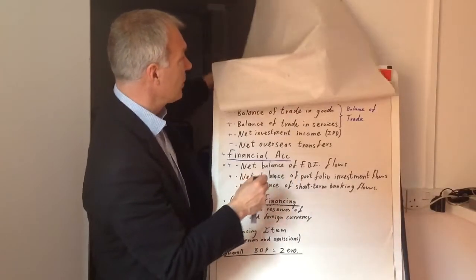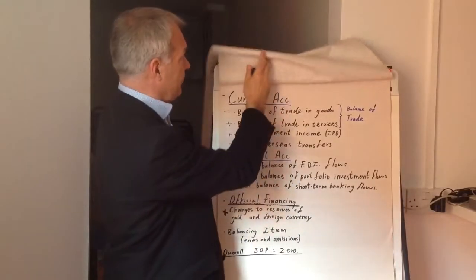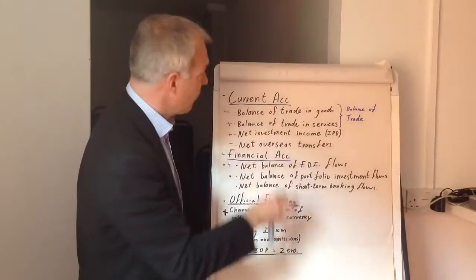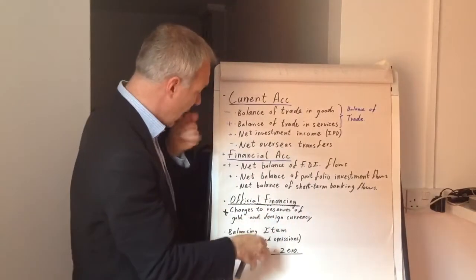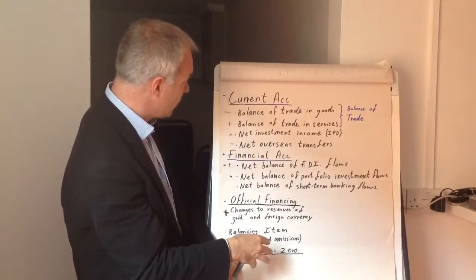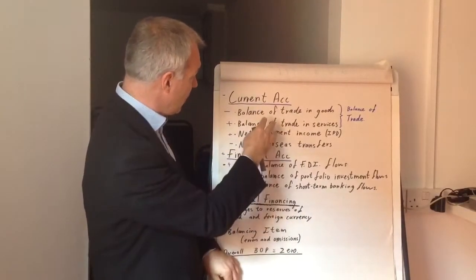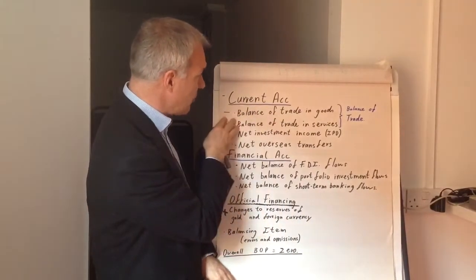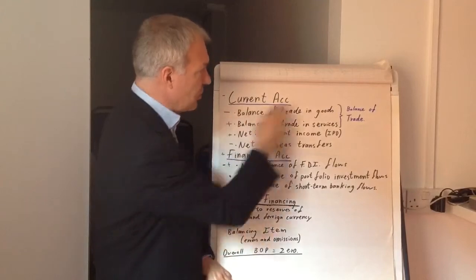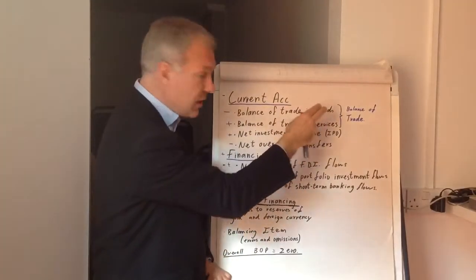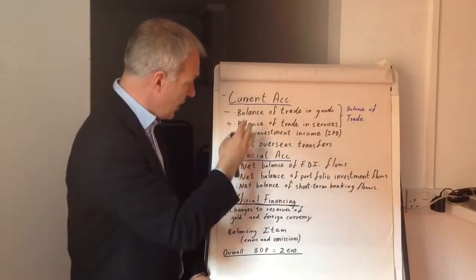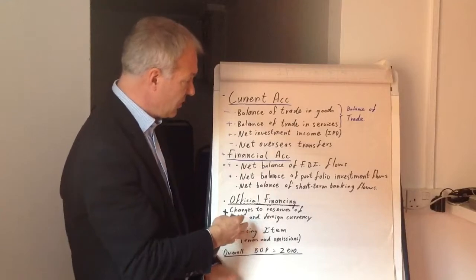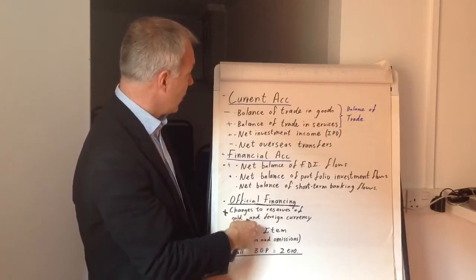If we look at the structure of the balance of payments, it's split into two clear areas: the current account, which includes the balance of trade, and also the financial account. Let's just go through these key points.